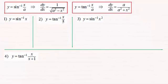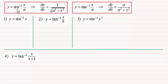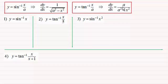Welcome to another video in my series on differentiating inverse trig functions. In the previous video I showed you how to derive the result for the differential of inverse sine of x over a — equal to 1 divided by the root of a squared minus x squared. And when you differentiate the inverse tan of x over a, it equals a divided by a squared plus x squared.